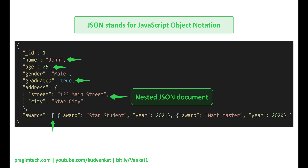The awards field value is an array. A student may have received zero or more awards, so there's a one-to-many relationship between students and awards. To model this in a relational database, we may have two tables: students stores students' data, awards stores awards data. In MongoDB, we have all the data in one JSON document.